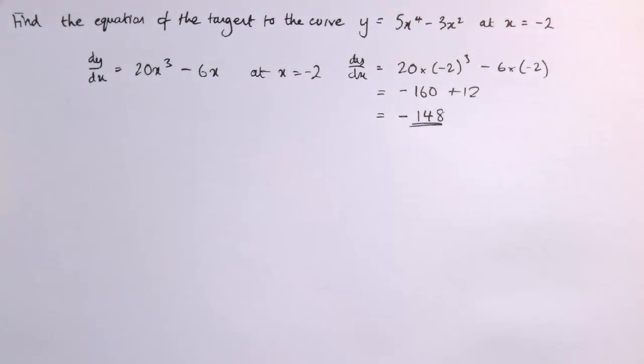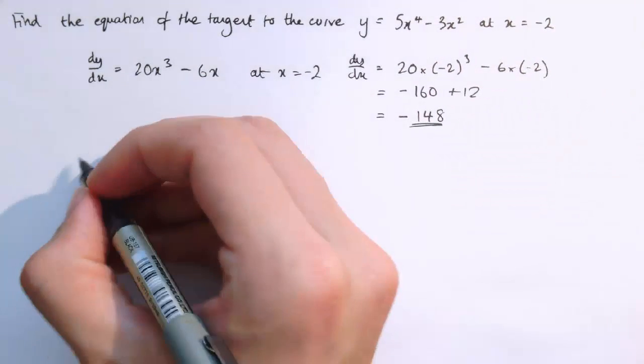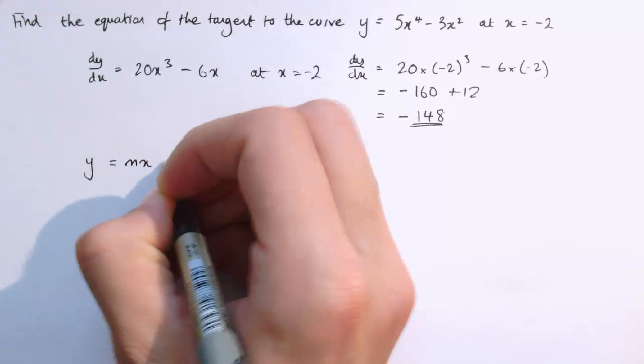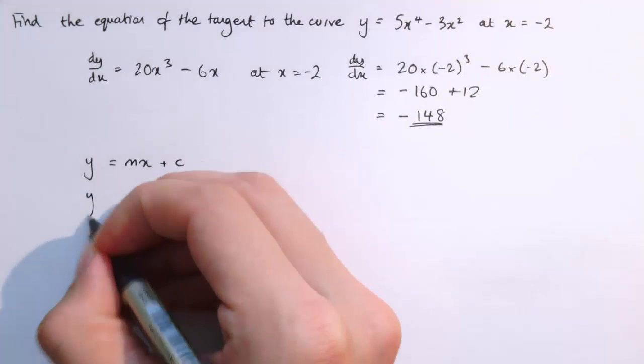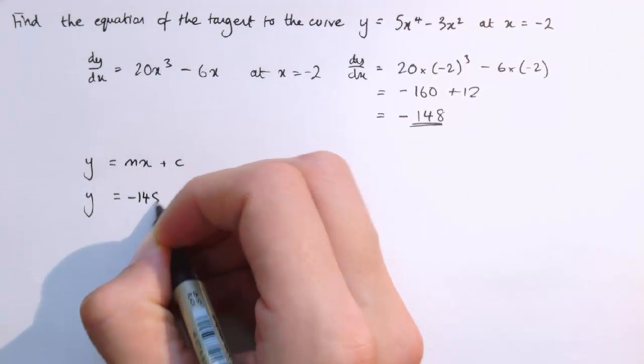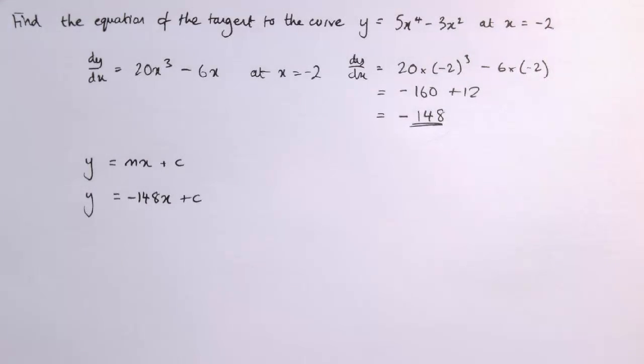It's a very steep negative curve at this point, but it is still a tangent to the curve, so it's still a straight line with the form y equals mx plus c. m, the gradient, is minus 148, so it's y equals minus 148x plus c.